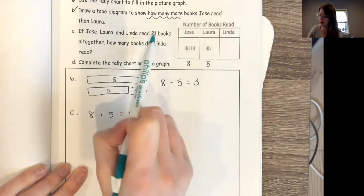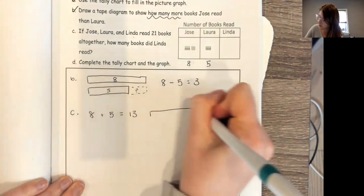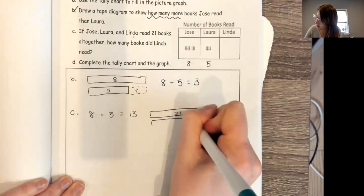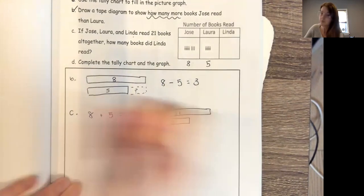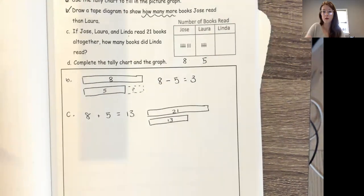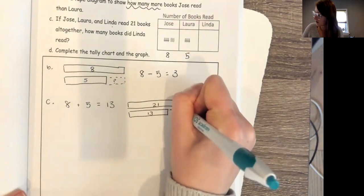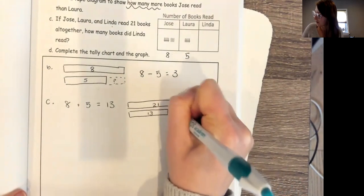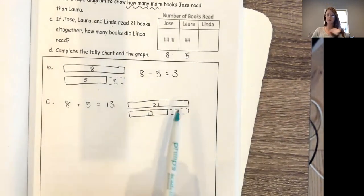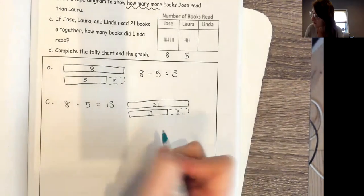Now I don't know how many Linda read yet, but I do know that they read 21 all together. I already know that Jose and Linda read 13. So now I need to figure out how much Linda read. So I'm solving for this missing part. I know automatically when I'm solving for a missing part, just like a comparison problem, that shows me I have to do subtraction.